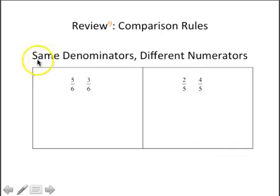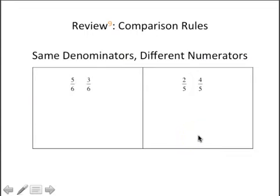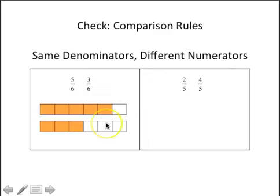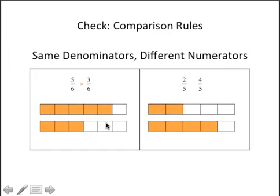Now we're going to review same denominator, different numerators. Go to number nine on your guided notes, think about the rule, and make these comparisons. Pause and then come back to check. Five-sixths compared to three-sixths: five-sixths is the greater fraction. Remember the rule — when fractions have the same denominator, the fraction with the greater numerator is the greater fraction. Five-sixths is greater than three-sixths. And thinking about the rule again: four-fifths is greater than two-fifths.